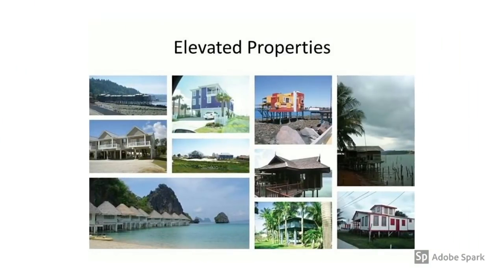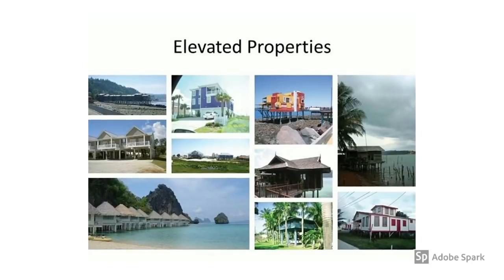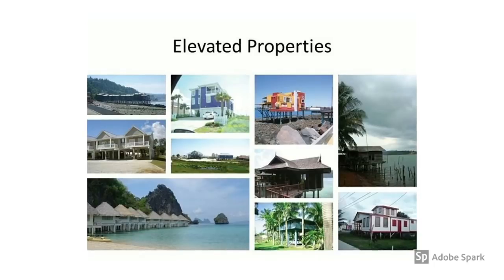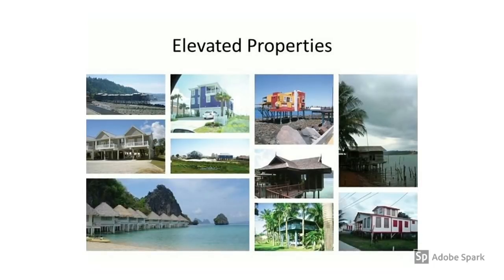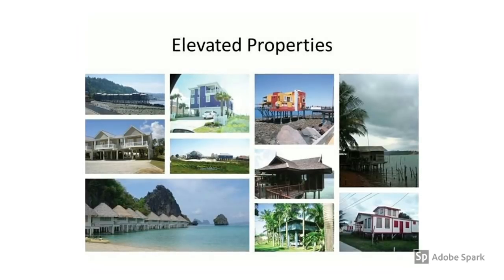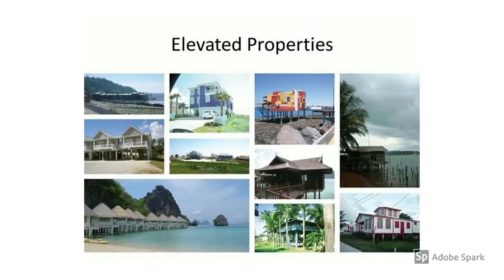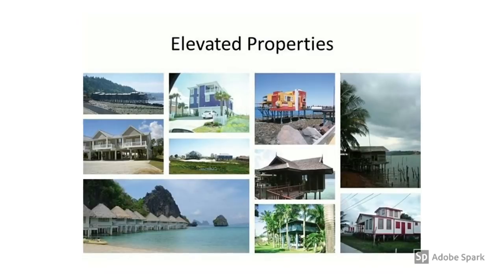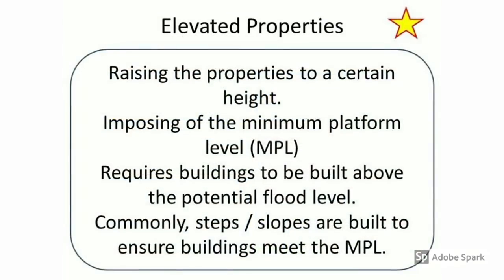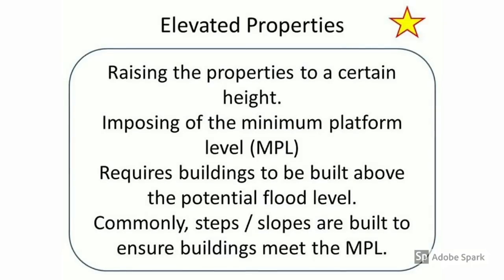The second mitigation method is elevating properties. Different types of properties can be elevated in various ways to prevent floodwater from entering homes. This is very common in Southeast Asia, especially in Malaysia. Properties are raised to a certain height before construction — for example, having an empty ground level used for storage or garages during non-flood times.